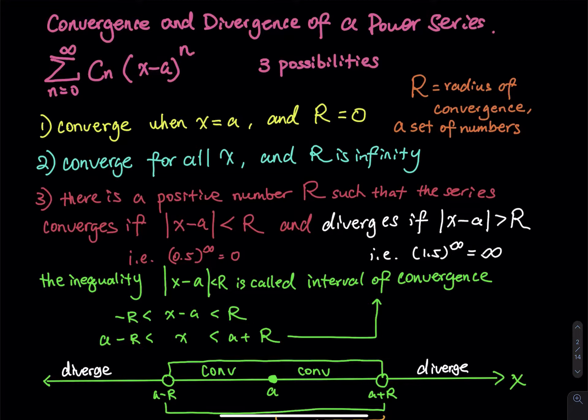Case two is converged for any x value, and R is infinity. It doesn't matter what x value you choose. The power series is always convergent. For case two, pick anything you like. You have all the freedoms you want. It's always convergent.